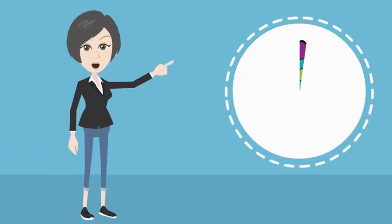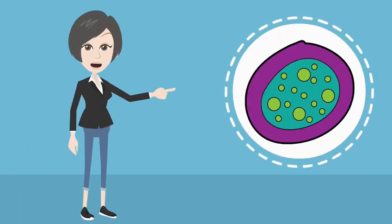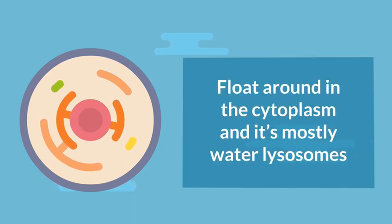Cytoplasm: This is the stuff that fills up the rest of the cell. The other components of the cell float around in the cytoplasm and it's mostly water.